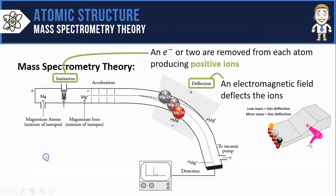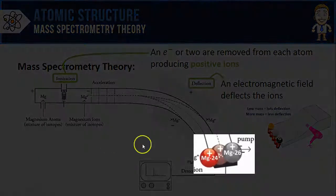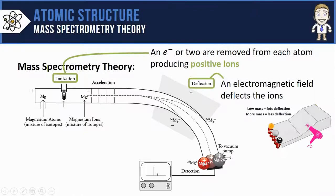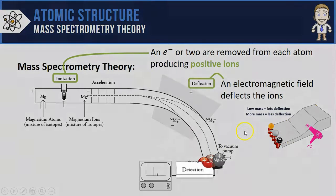So as the isotopes pass through the electromagnetic field, they get separated. The heavy isotope, the Mg-26, is deflected the least, whereas the lighter isotope, the Mg-24, was deflected the most, just like we saw with the low mass and high mass balls being rolled down the hill.